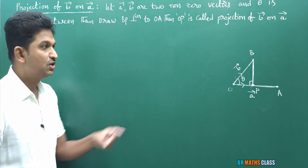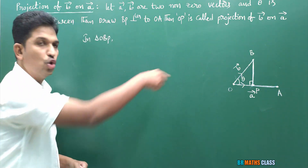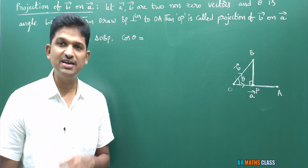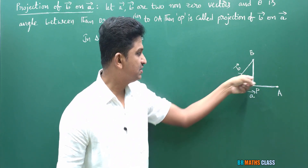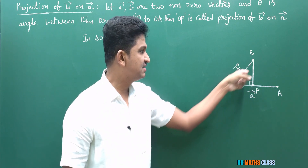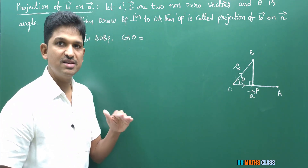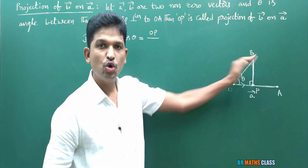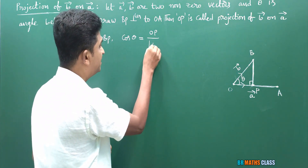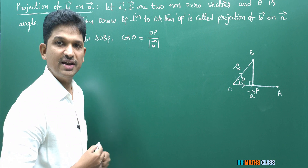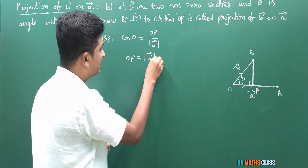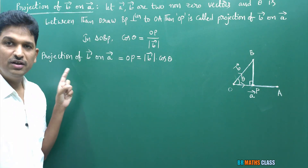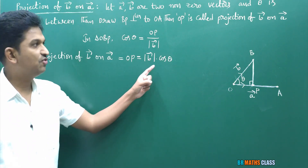Now we will calculate the formula for OP. Observe that in the diagram, triangle OBP is a right-angle triangle. In this triangle, cos theta equals adjacent side by hypotenuse. Here BP is the opposite side of theta, opposite to 90 degrees is the hypotenuse, and OP is the adjacent side. So cos theta equals OP divided by OB. OB is the magnitude of vector B bar. From this, OP equals magnitude of B bar into cos theta. So the projection of B bar on A bar equals magnitude of B bar into cos theta.